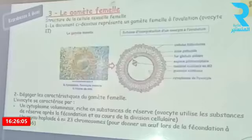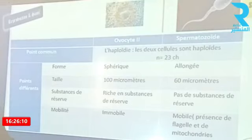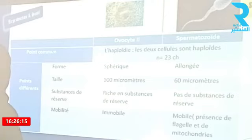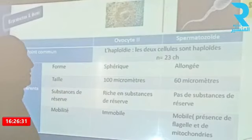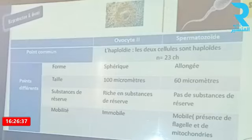On a mentionné la possibilité de comparaison entre le gamète mâle et le gamète femelle. À titre de conseil méthodologique, la comparaison nécessite obligatoirement l'établissement d'un tableau avec en colonnes les éléments à comparer — ici l'ovocyte 2 et le spermatozoïde — et en lignes les critères de comparaison.